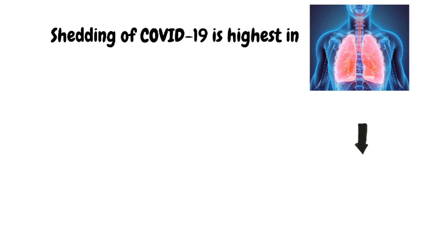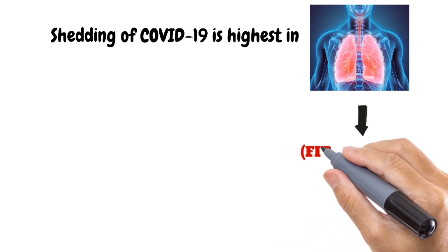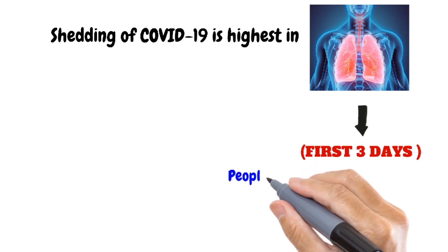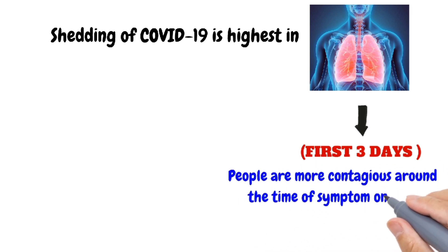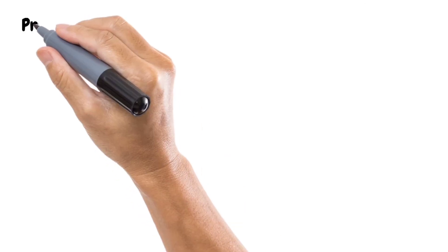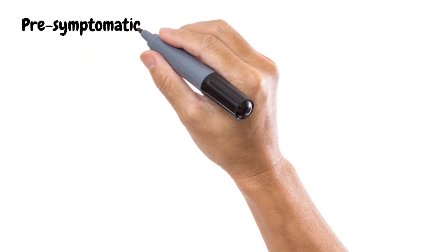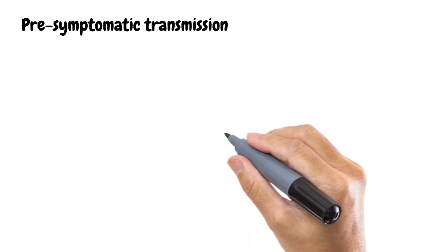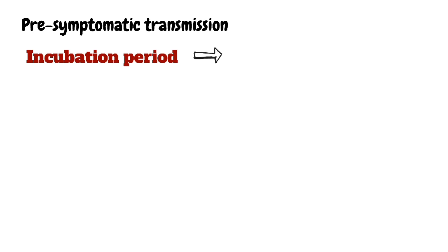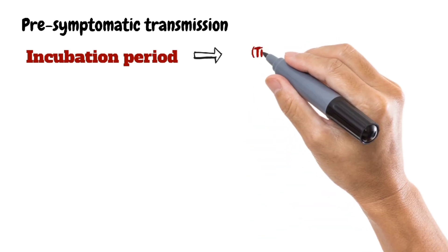Shedding of COVID-19 is highest in the upper respiratory tract, mainly for the first three days. People are more contagious around the time of symptom onset as compared to later on in the disease.